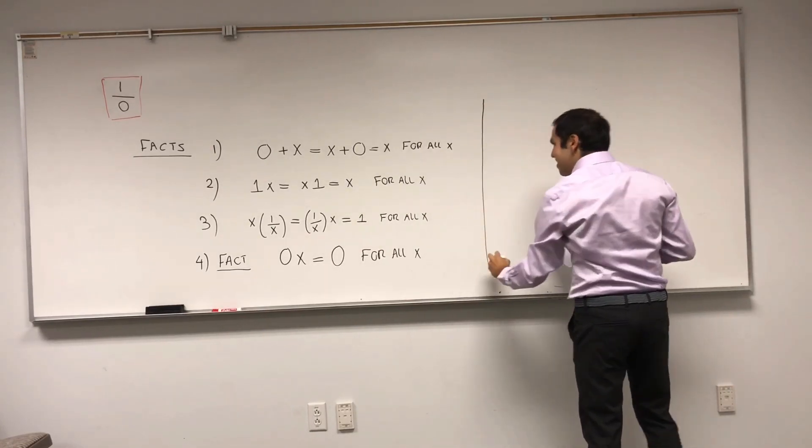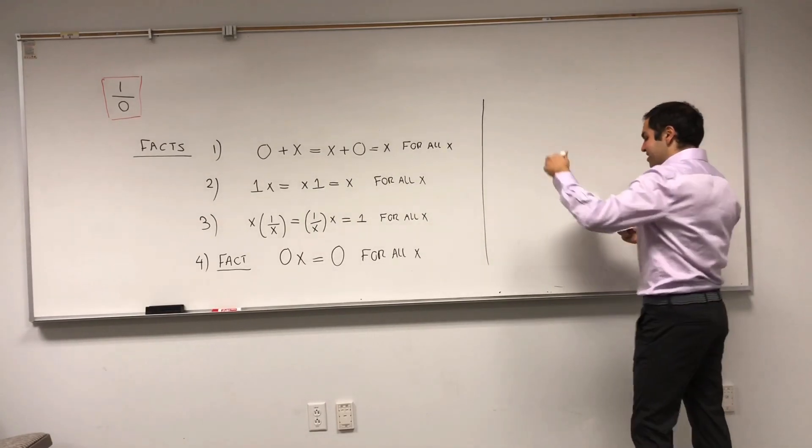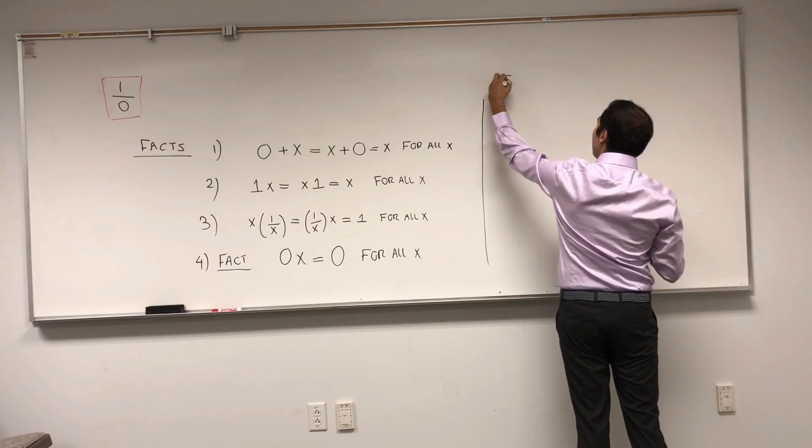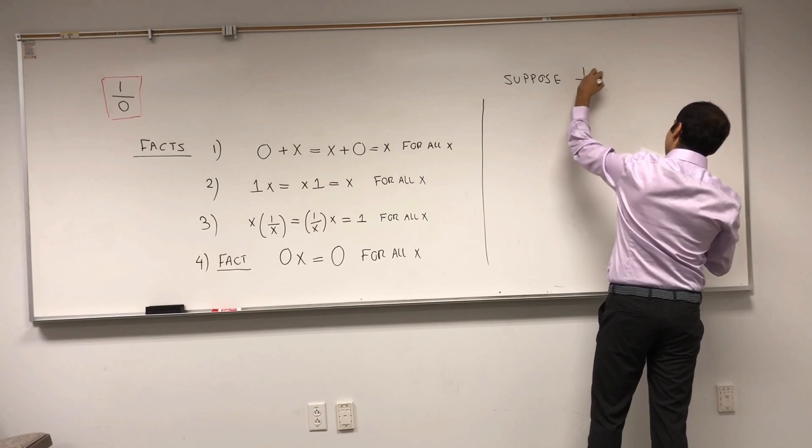Okay. With those four facts, we can actually prove that 1 over 0 doesn't exist. So, suppose 1 over 0 exists.